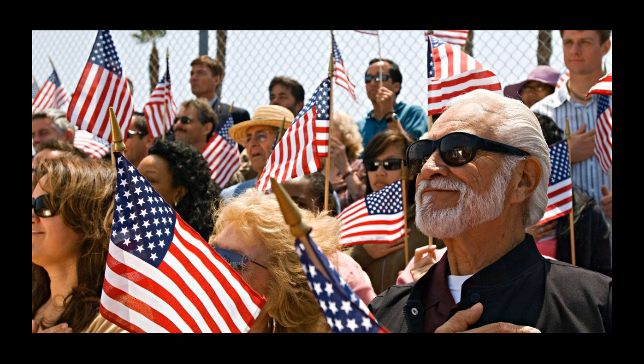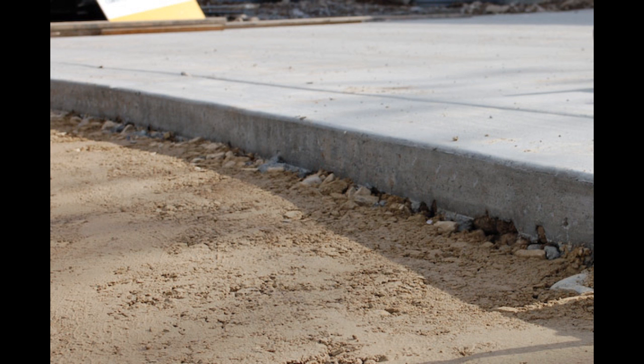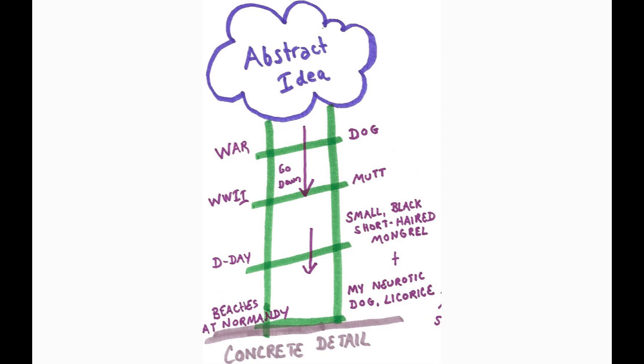When you use vivid, descriptive language, you're making the ideas in your head concrete and tangible so that they're as clear as possible for your audience to understand. Take a look at this example of the ladder of abstraction, a conceptual metaphor intended to help us understand the varying levels of concrete language. As you can see from this example, the farther down the ladder you go, the more specific and definite the nouns become, making the meaning much clearer along the way.